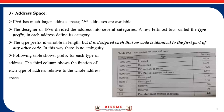When an address is given, the type prefix can easily be determined. This table shows the type prefix for IPv6 addresses. The third column shows the fraction of each type of address relative to the whole address space.